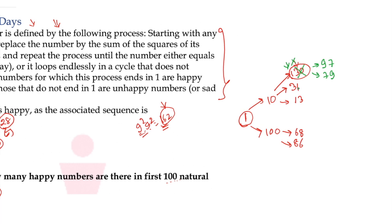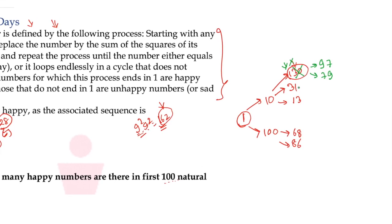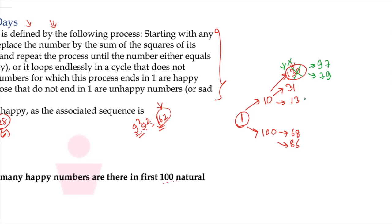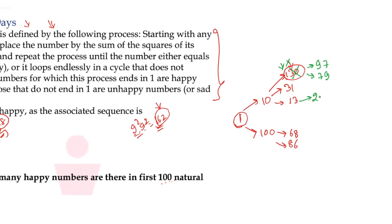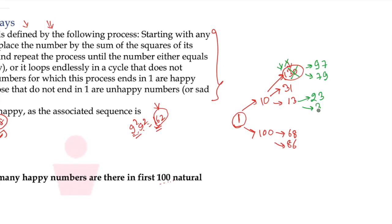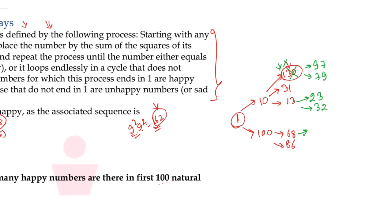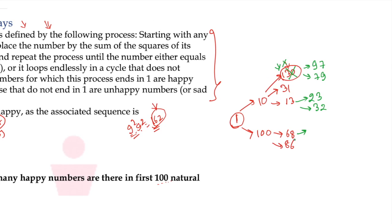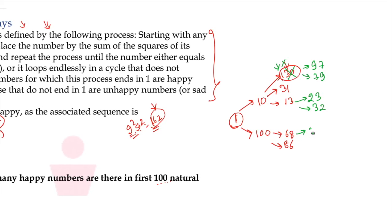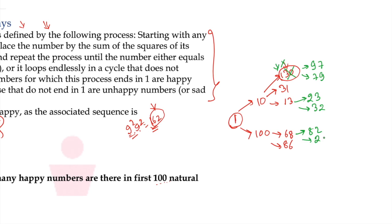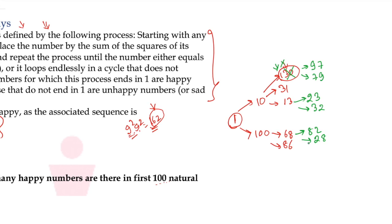31, are we getting any summation in 31? I don't think so. 25, 6, no. 13, either 4 or 9. So we have nothing but 23 and 32. 68, are we getting any 68? That is 64. Yep. 8 and 2 and 2 and 8. So this one is how you are going to calculate all these things and there is no other way of solving this.